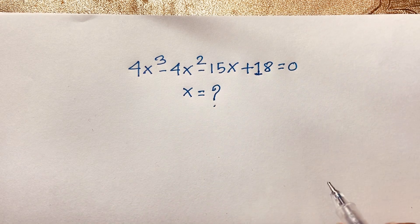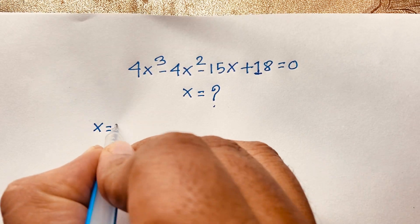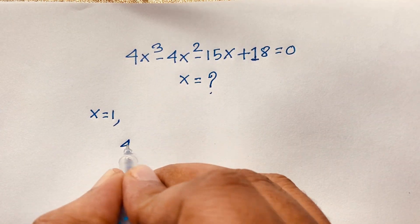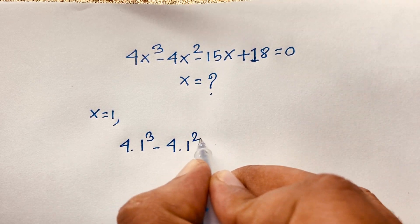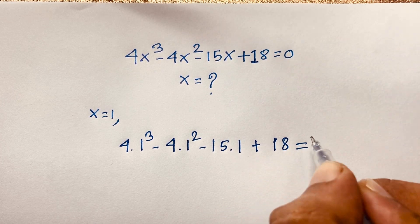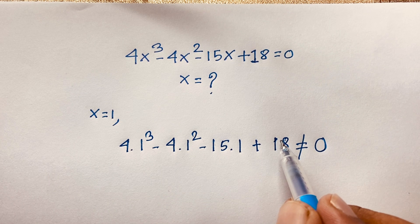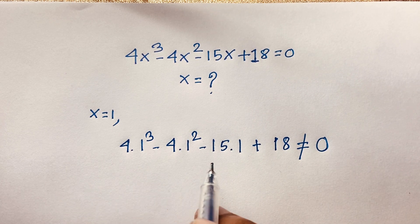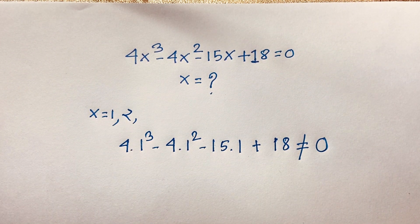Our equation is 4x³ minus 4x² minus 15x plus 18 equals 0. First, we test x equals 1: we get 4 minus 4 minus 15 plus 18, which is not equal to 0 since 18 minus 15 is not 0. So x equals 1 is not a root. We then try x equals 2, which also does not satisfy the equation.